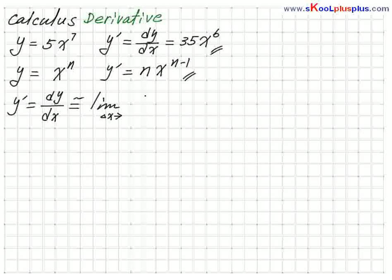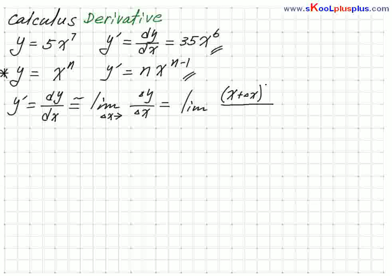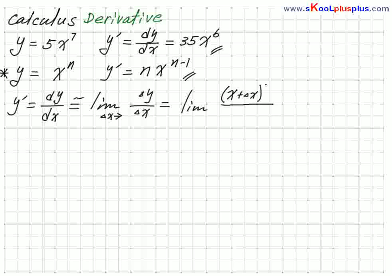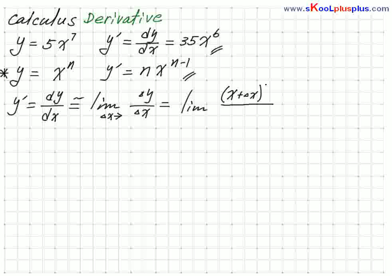This is similar to the limit as delta x goes to zero of delta y over delta x. So what is delta y? We write the limit with the fraction: x plus delta x, a little bit of movement, to the nth power, minus the original x to the nth power, all over delta x, as delta x approaches zero.